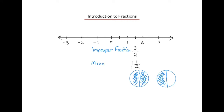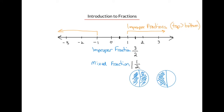Mixed fractions are made up of a whole number and a fraction. Fractions greater than 1 or less than negative 1 are improper fractions, and also mixed fractions. For improper fractions, the numerator, or top number, is greater than the denominator, or bottom number. So 3 is greater than 2, so it's an improper fraction.